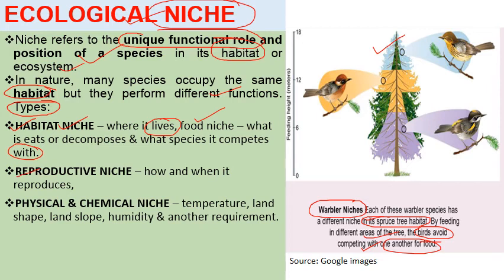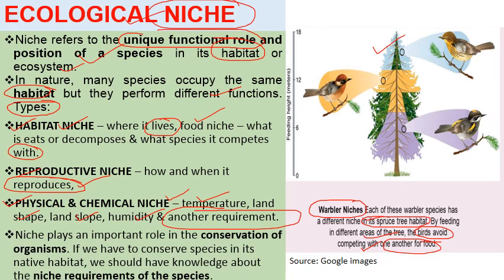Next is reproductive niche — how and when an organism reproduces, which varies from species to species. There is also physical and chemical niche, which includes temperature, land shape, land slope, humidity, and other requirements unique to each species. The niche plays a very important role in conservation of organisms. If we know the profession of an organism, we can protect it against climate change or man-made extinctions. To conserve a species in its native habitat, we need knowledge of its niche requirements.